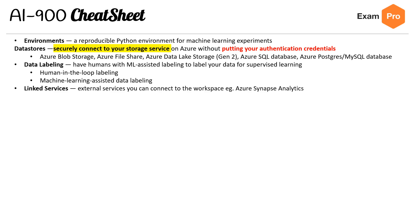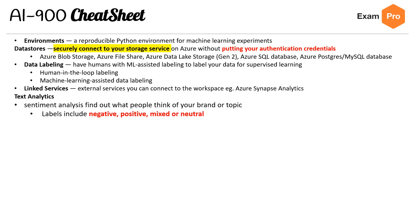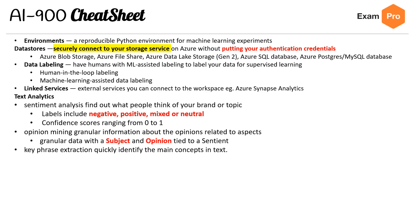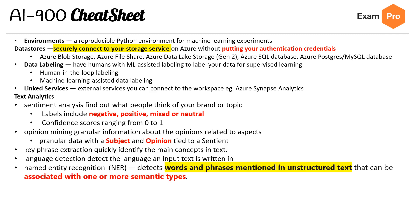Now moving out of Azure Machine Learning into Cognitive Services — Text Analytics. Sentiment Analysis finds out what people think of your brand or topic; labels include negative, positive, mixed, or neutral, with confidence scores ranging from zero to one. Opinion Mining provides granular information about opinions related to specific aspects, with a subject and opinion tied to a sentiment. Key Phrase Extraction quickly identifies the main concepts in text. Language Detection detects the language an input text is written in. Named Entity Recognition (NER) detects words and phrases in unstructured text that can be associated with one or more types.